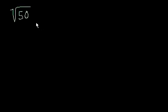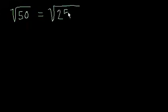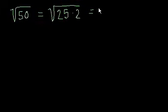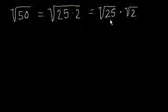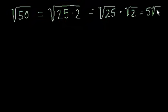The square root of 50. Well, 50 is the same thing as 25 times 2. And based on what we just did — this is really just an exponent rule — the square root of 25 times 2 is the same thing as the square root of 25 times the square root of 2. We know the square root of 25 is 5, so that just equals 5 times the square root of 2.